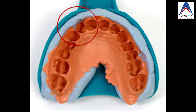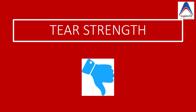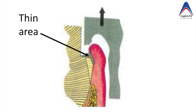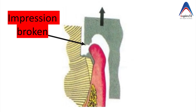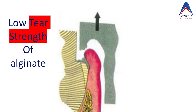The next important property is tear strength. Suppose you are recording a very thin area where very little alginate has reached — when pulling it from that thin area, the impression material will break very easily because of the low tear strength.